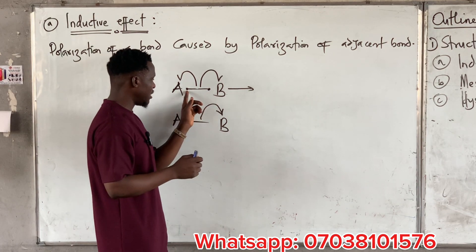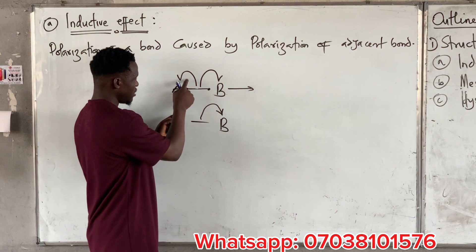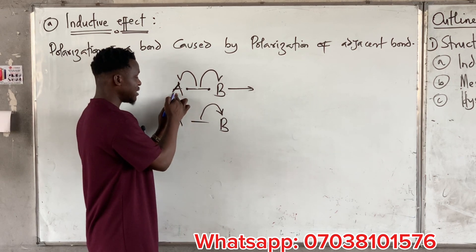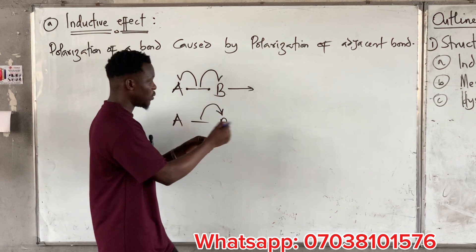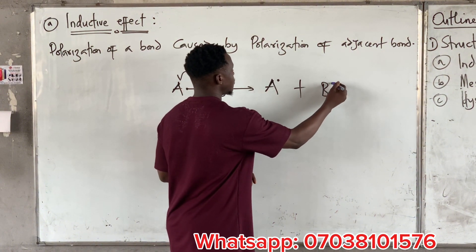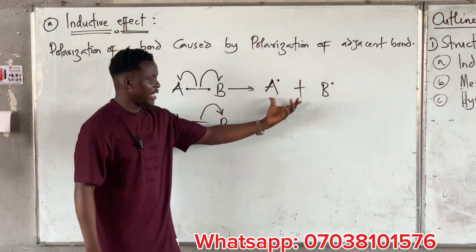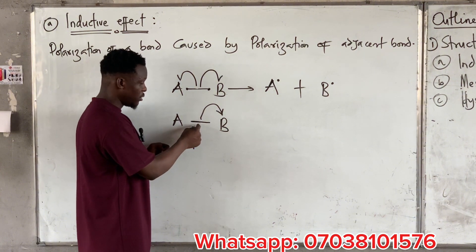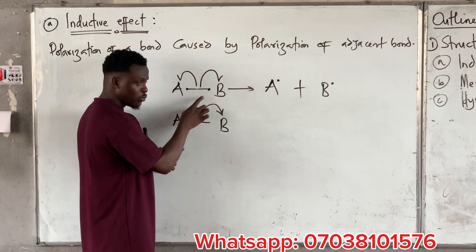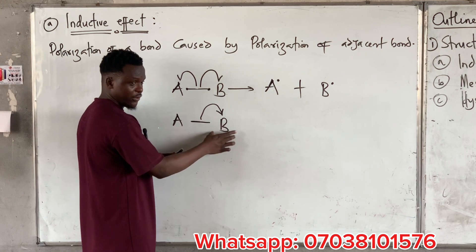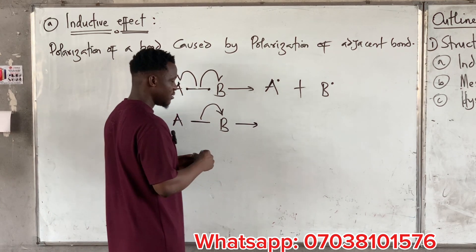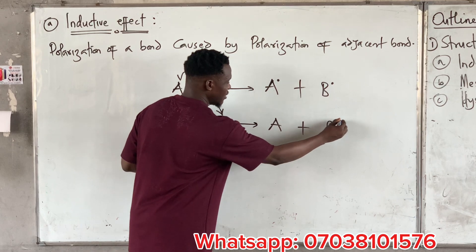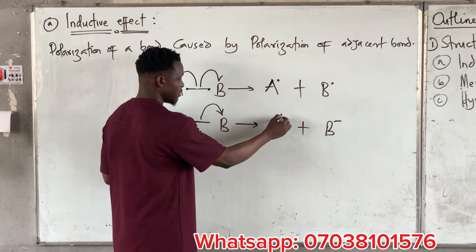Each bond contains two electrons, one on the left, one on the right. In homolytic cleavage, the two electrons that make up the bond are shared equally — one stays with A, the other stays with B, giving us A• and B•. These are called free radicals. In the second case, the bond is broken such that both electrons are pulled and placed on B, where the double-headed arrow is facing, giving us A⁺ and B⁻.